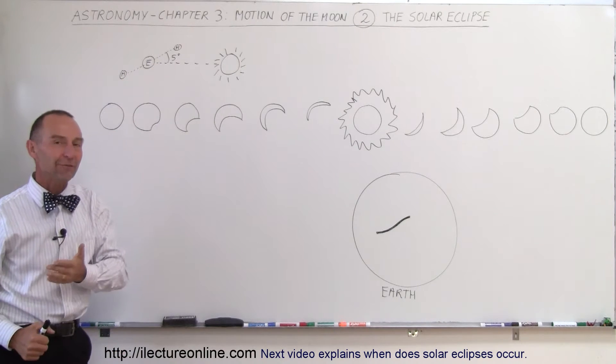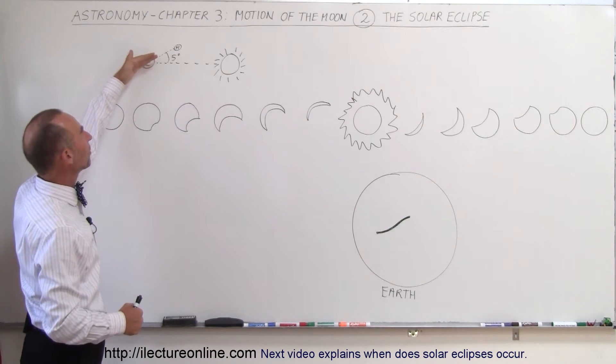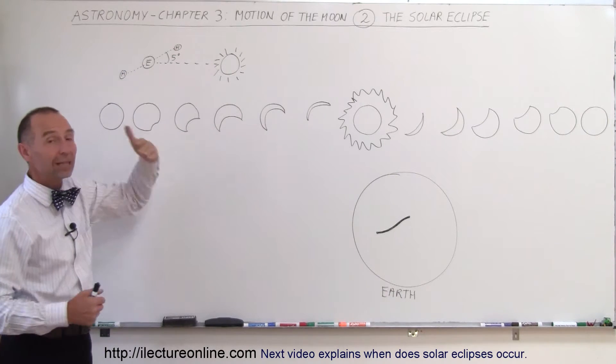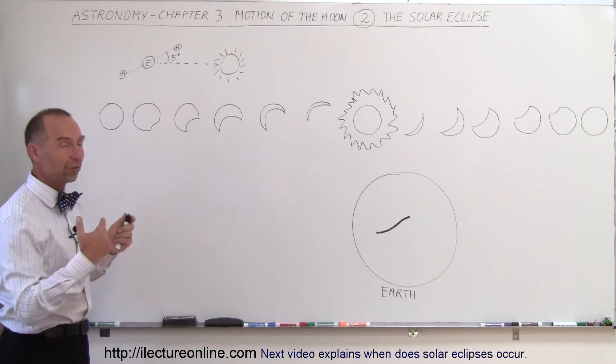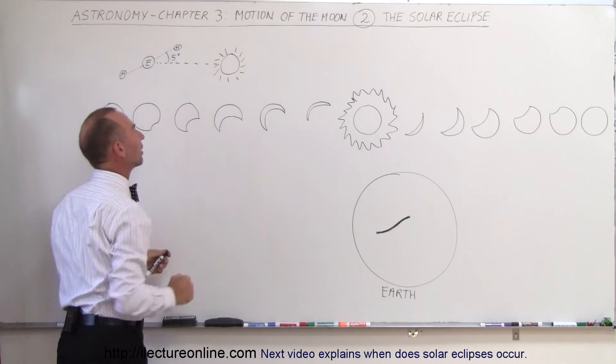We know now there's about a five degree difference between that orbit, which means that most of the time the Moon will spend its time above or below the ecliptic plane, so that there's no possibility at that time for the Moon to get right between the Earth and the Sun, blocking out the light of the Sun.